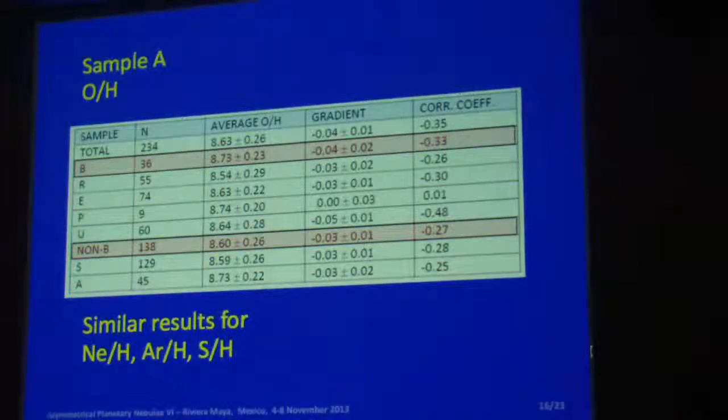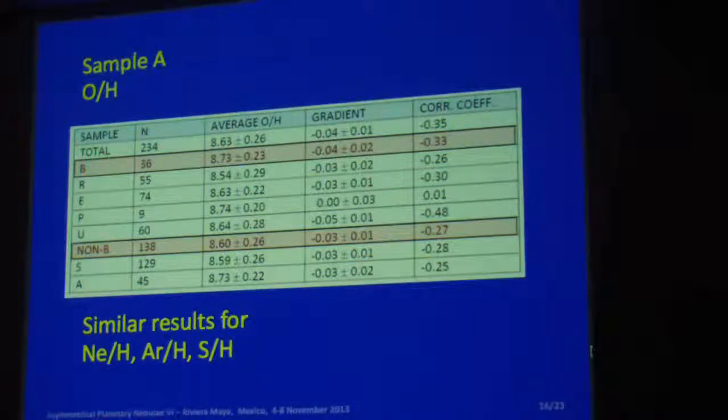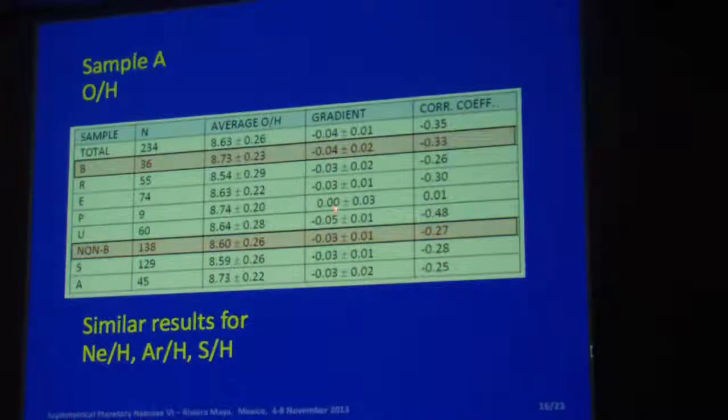I don't expect you to read this table, but if you look at the red parts here for sample A for oxygen, we have the same thing for neon, argon, and sulfur. If you look at the bipolar level, you see that the average abundances are higher than those in non-bipolars. That confirms that bipolars are younger. They are formed from a lot richer interstellar medium. But the gradient is not very different for bipolars and non-bipolars in this particular sample.